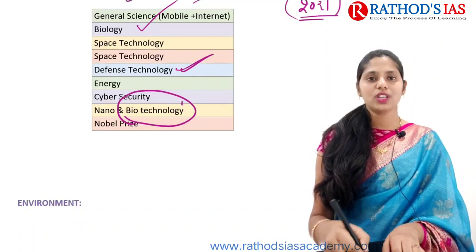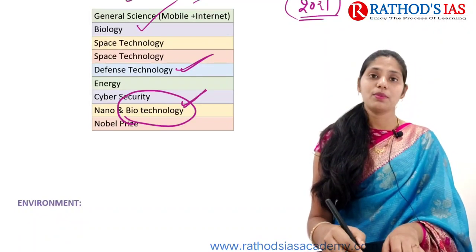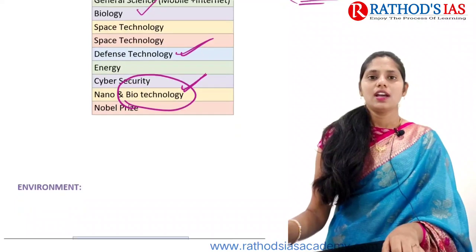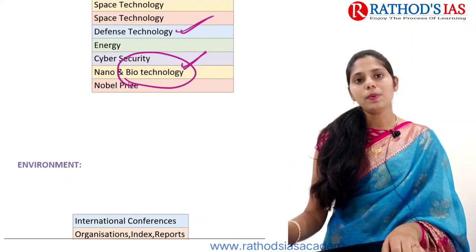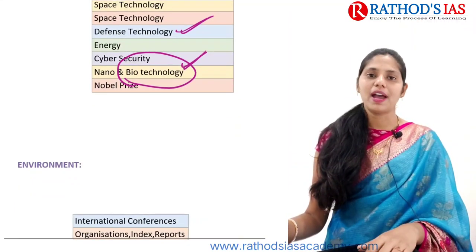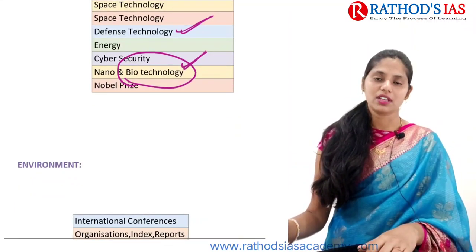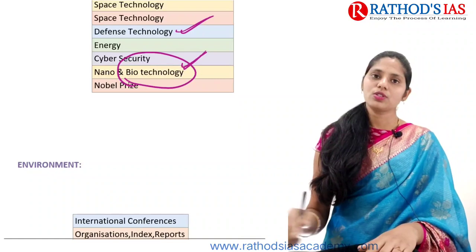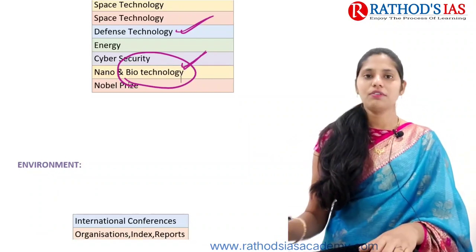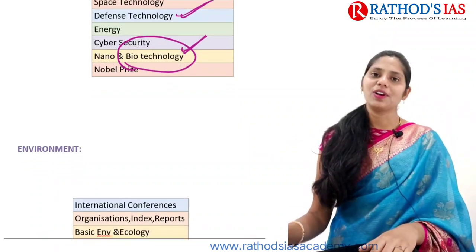Finally in Science and Technology, you need to focus on Nanotechnology and Biotechnology — from Biotechnology you can get many questions. Every year the Nobel Prize is awarded in fields of medicine, science, and chemistry, and that is also very important from the Science and Technology perspective.